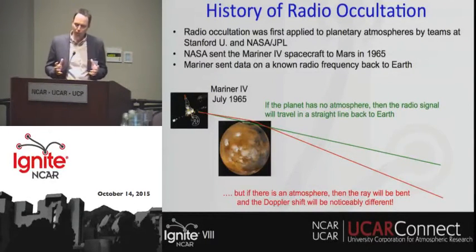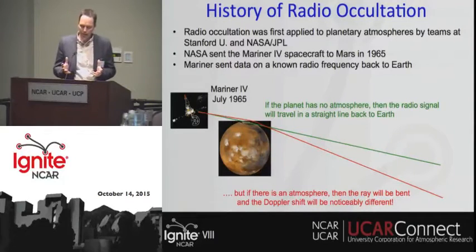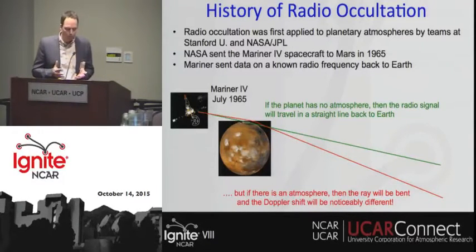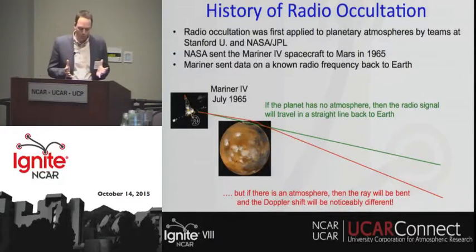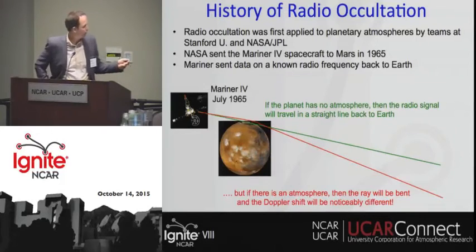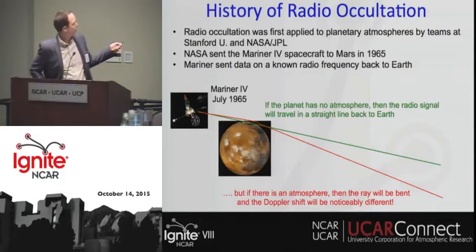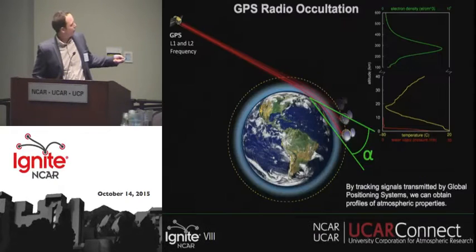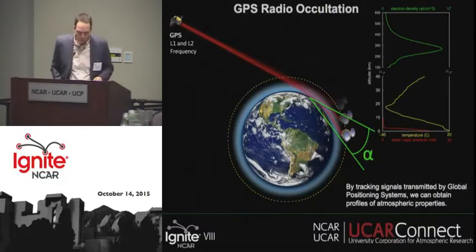Radio occultation was first applied to the planetary atmospheres. Basically, the way it works is if we have a signal transmitted from a satellite — if there's no atmosphere, the signal doesn't bend. If there is an atmosphere, the signal bends, and there will be a noticeable Doppler shift.